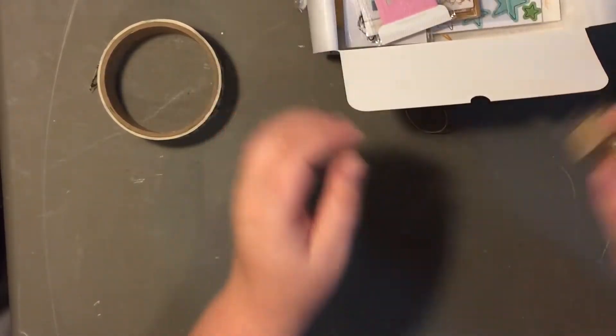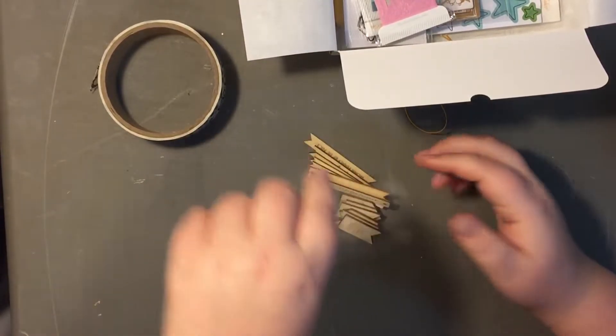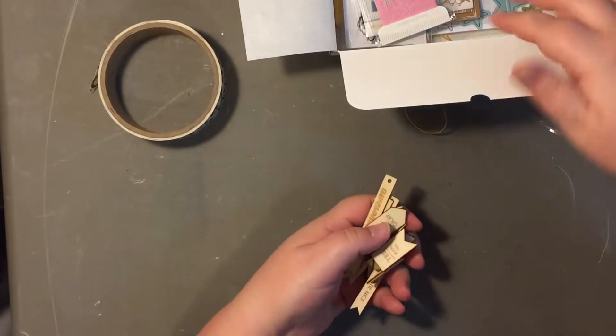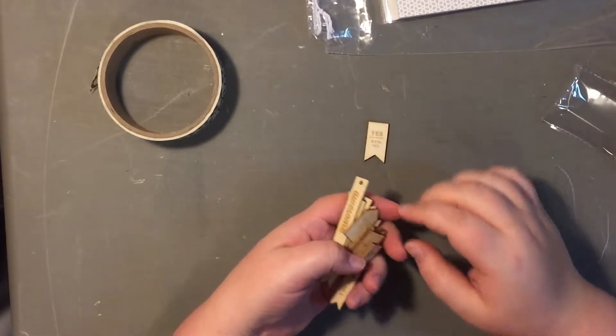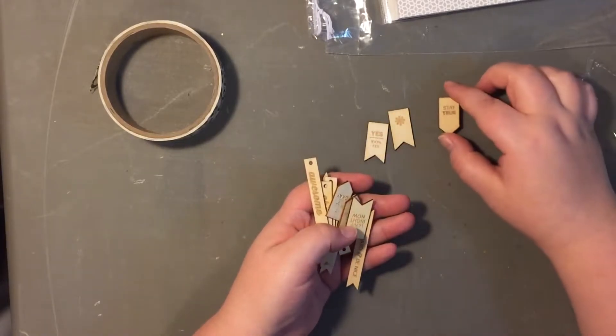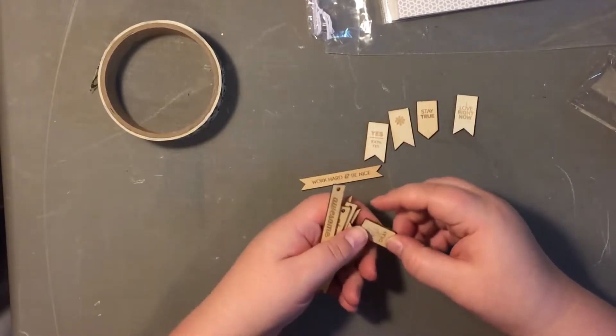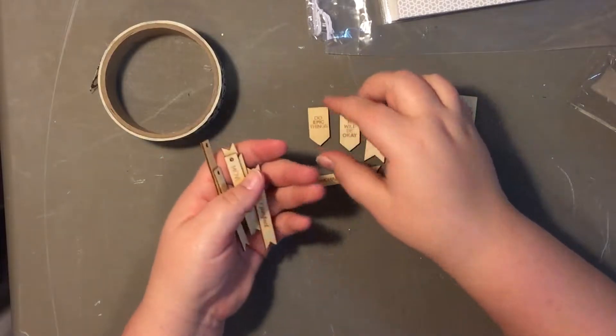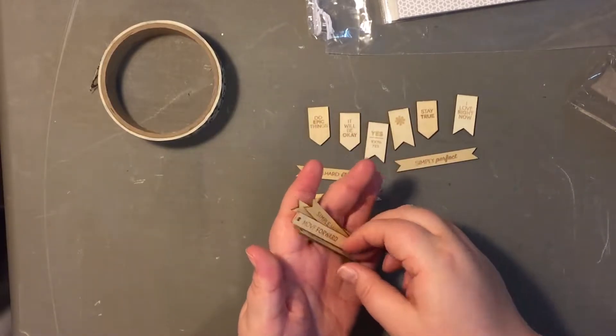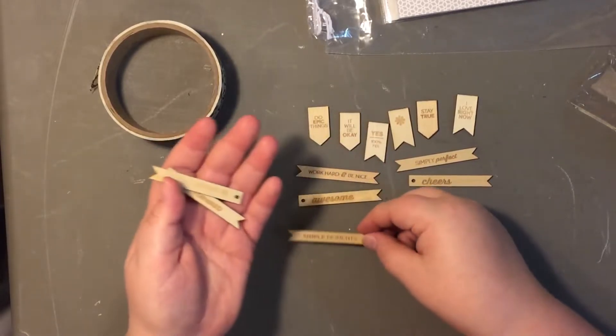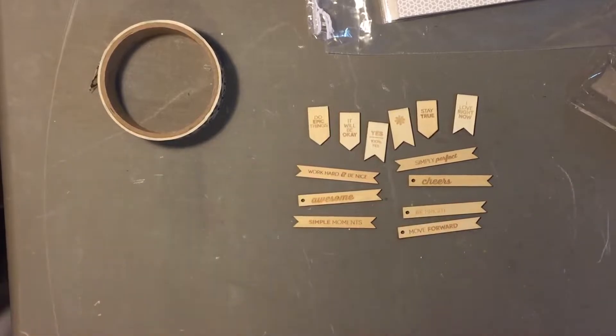Then wood veneer. So that says, let me move that out of the way for a second. Yes. 100%. Yes. Little asterisk. Stay true. I love right now. Work hard and be nice. It will be okay. Do epic things. I love that one. Simply perfect. Awesome. Cheers. Simple moments. Be bright. And move forward.